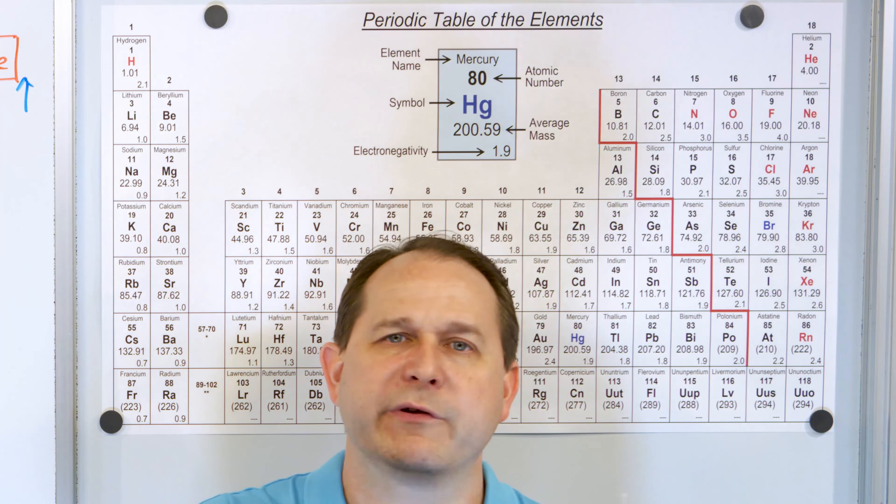We call the rows periods — that's one reason why it says periodic table. This is period one, period two, period three, period four, period five, period six, and period seven. The periods go across. Now the columns — we don't call them columns, we call them groups. This is group one, group two, group three, group four, and so on. We have groups numbered up to group 18.